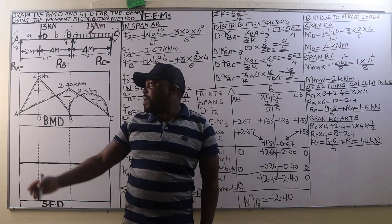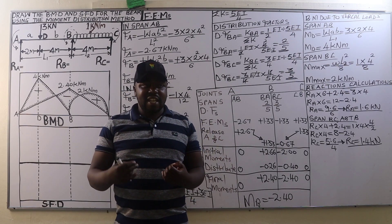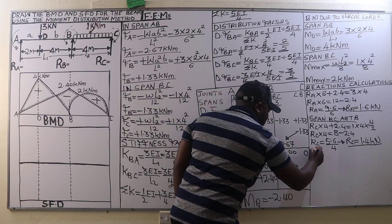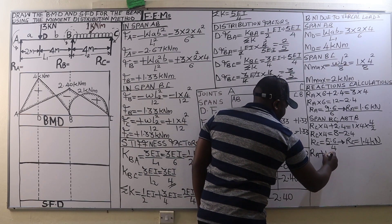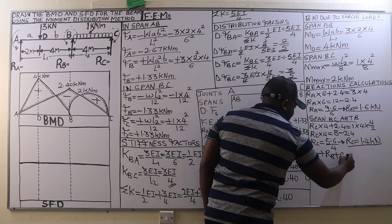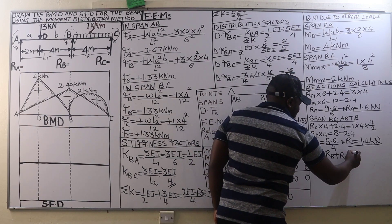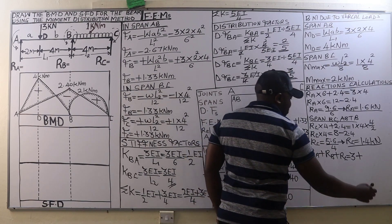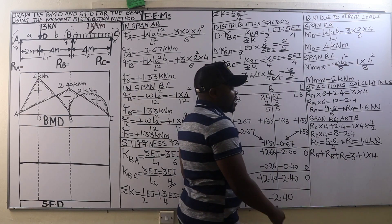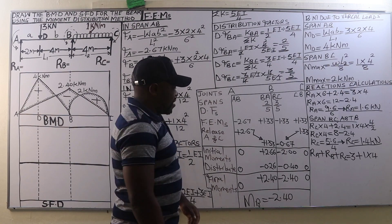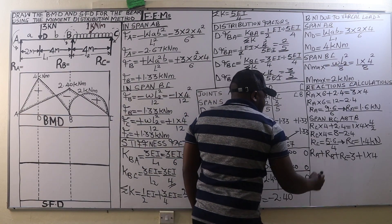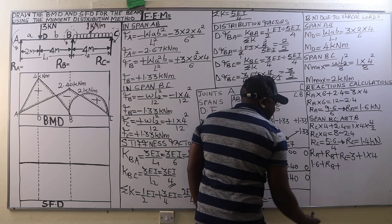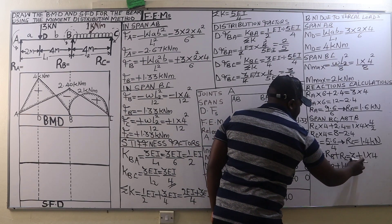To get the reaction at B, we use the condition that the sum of all upward acting forces equals the sum of all downward acting forces. Upward: reaction at A plus reaction at B plus reaction at C. Downward: point load at D of 3 kilonewtons, plus the UDL of 1 kilonewton per meter times 4 meters equals 4 kilonewtons. So RA of 1.6 plus RB plus RC of 1.4 equals 3 plus 4.